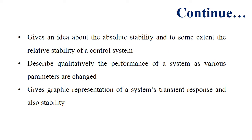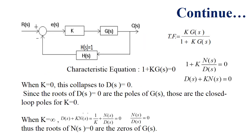It can also be used to describe quantitatively the performance of a system as various parameters are changed. It gives graphical representation of a system's transient response and also the stability of the system. The root locus method helps us understand how to use this method to aid the control system design and analysis.